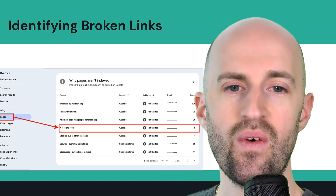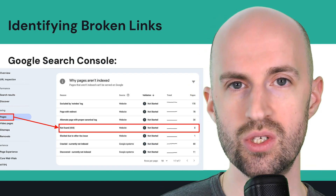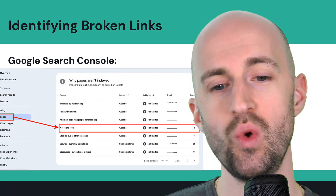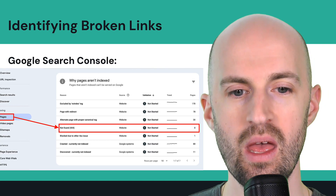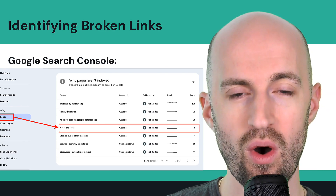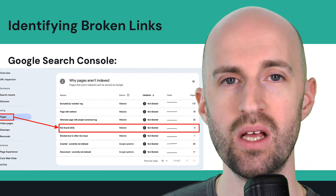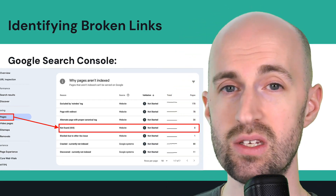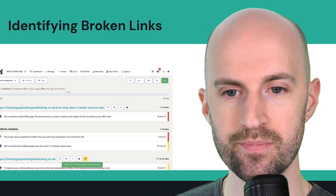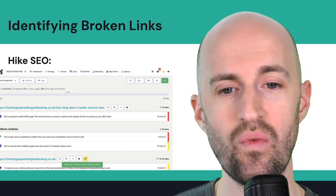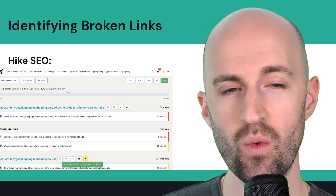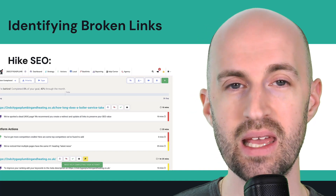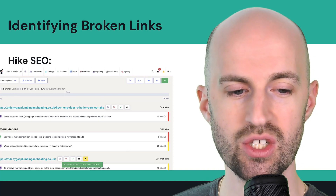There are different ways to identify broken links. In Google Search Console, once you've added your site, click on Pages in the left-hand menu and it will show you any 404 not found errors. When you click on those, it will list the pages that are throwing a 404. You can then go into WordPress and create 301 redirects to improve user experience and pass on link equity from those old pages. You can also use Hike SEO to flag up any 404 errors — it will automatically do that once you've created your account and added your website.